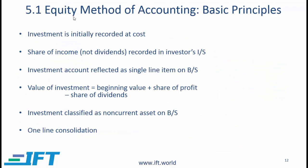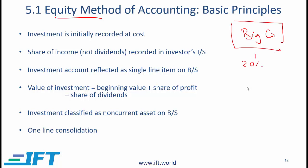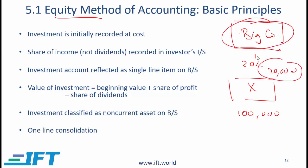To understand the equity method, let us consider a very simple example. Let's say big company buys a 20% stake in company X. Say that X is worth 100,000, and a 20% stake is therefore worth 20,000. So the investment made by big company is 20,000, and big company will show an investment of 20,000 on the balance sheet, classified as an investment in an associate company.